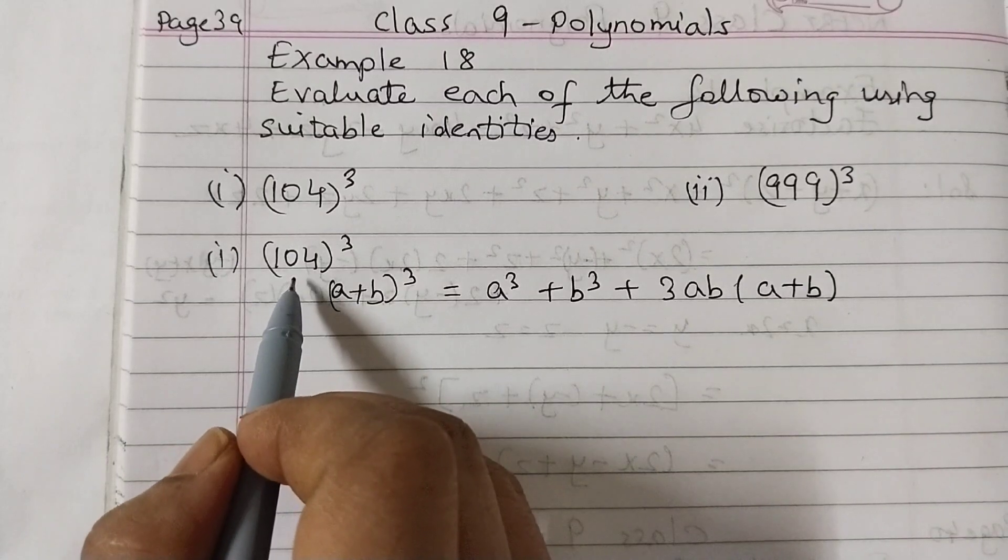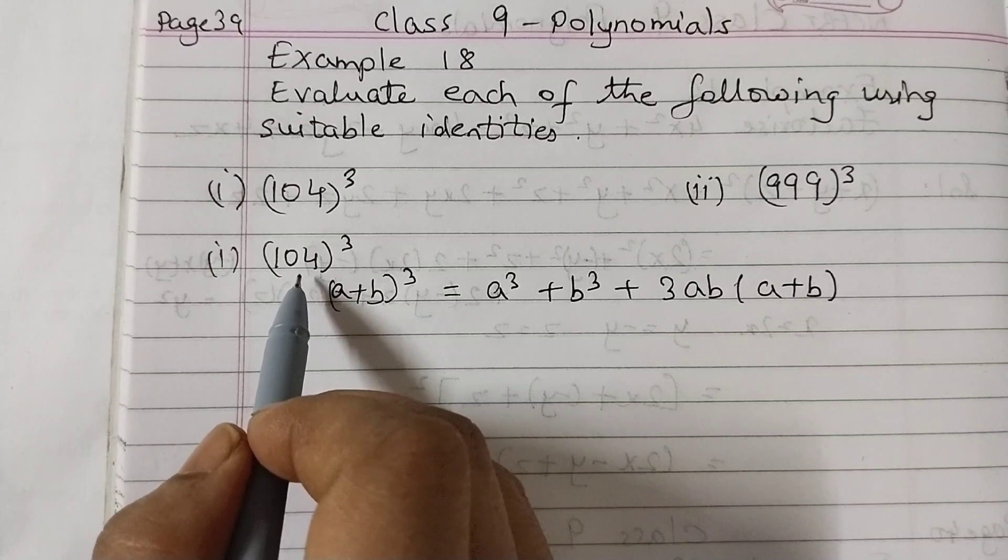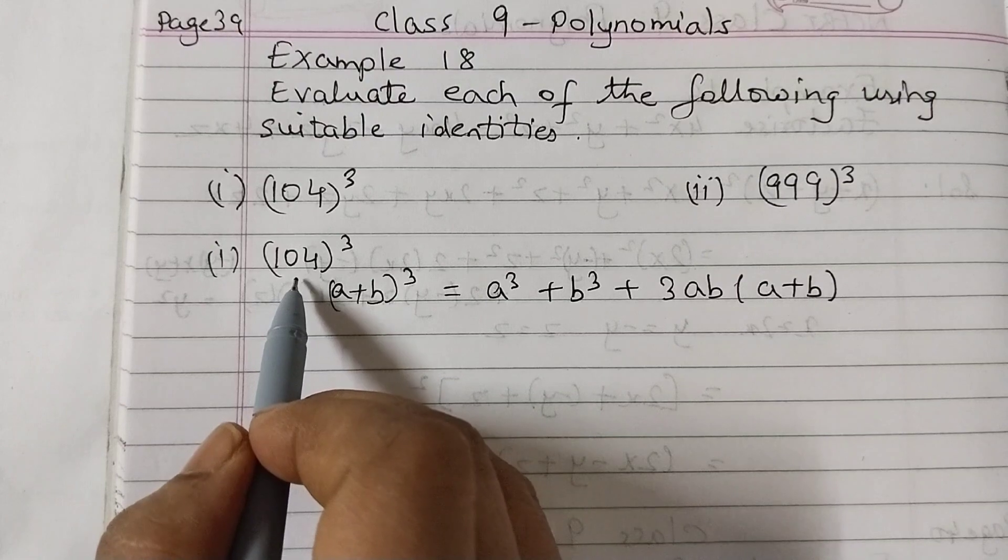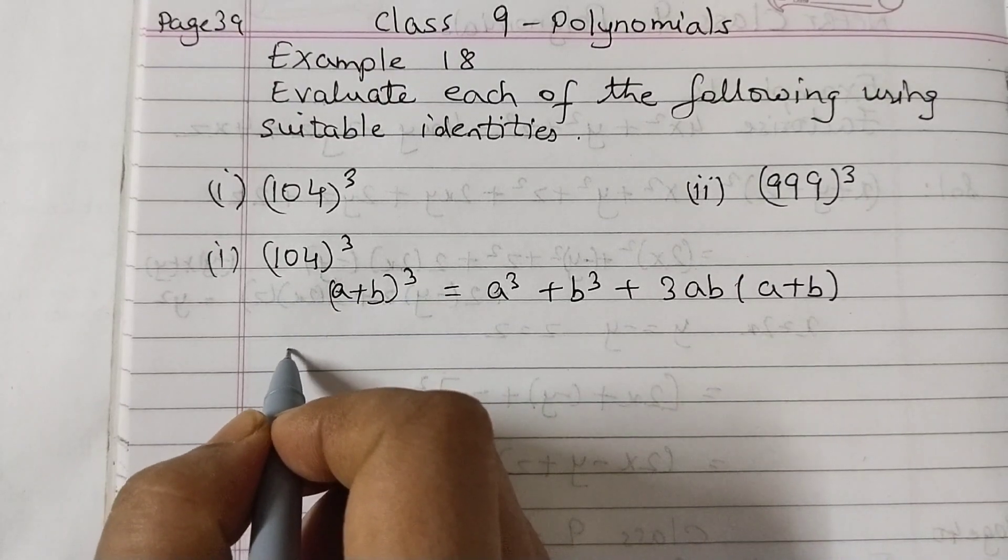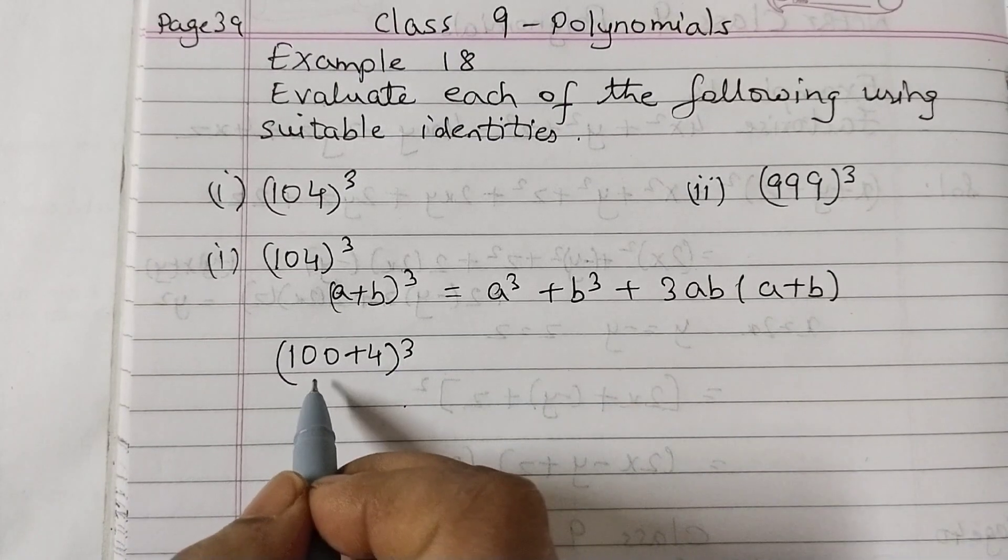So 104 we need to split in such a way that we get a term with zero and another term. So here we can get it as 100 plus 4. So 104 cubed is 100 plus 4 cubed.